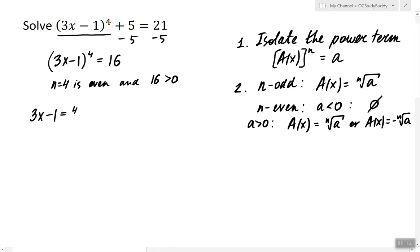Therefore 3x minus 1 is either equal to the 4th root of 16, or 3x minus 1 is equal to negative 4th root of 16.